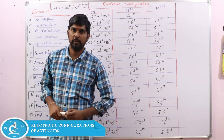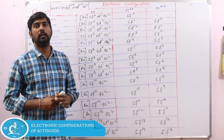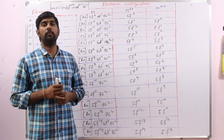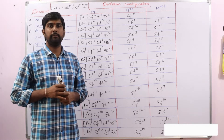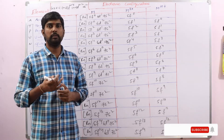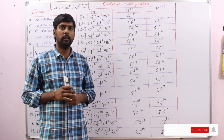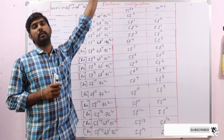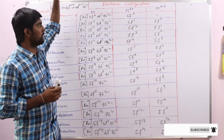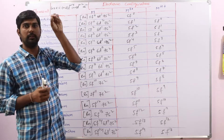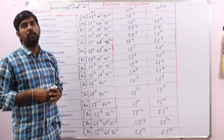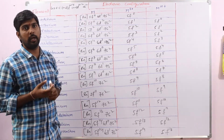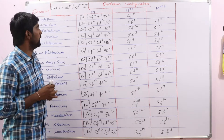Hello viewers. In the previous lecture we discussed the electronic configuration of 4F series elements, that is lanthanoids. In this lecture we are going to discuss the electronic configurations of 5F series elements, that is actinoids.